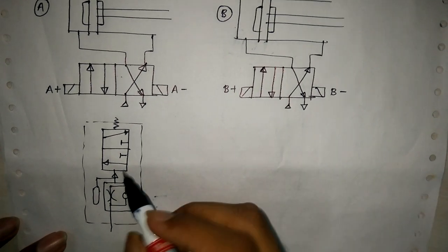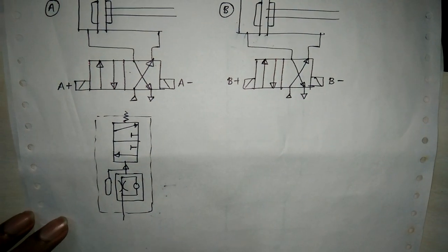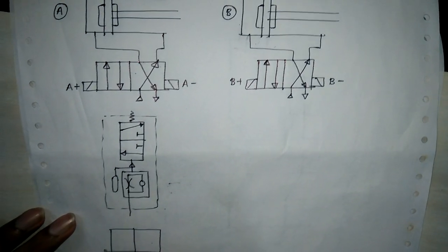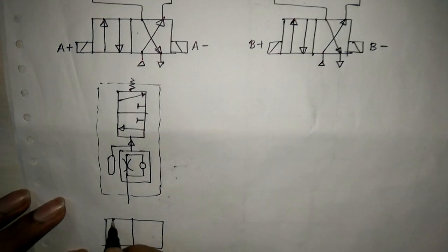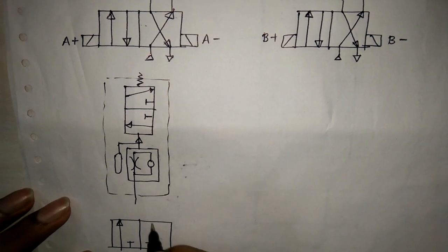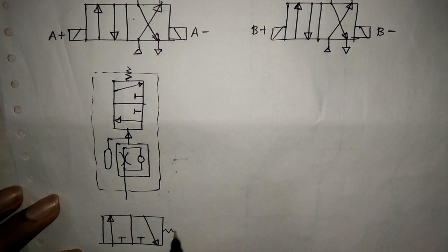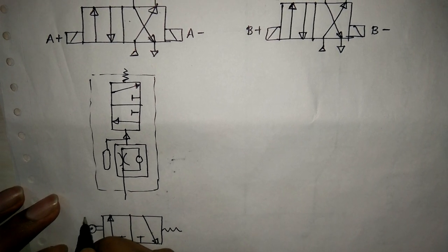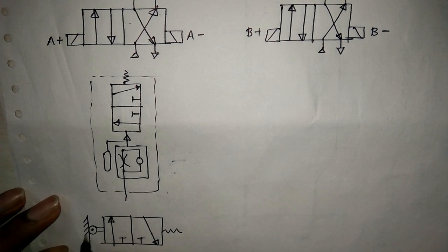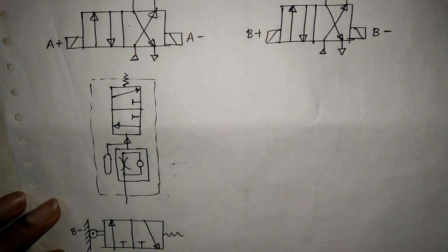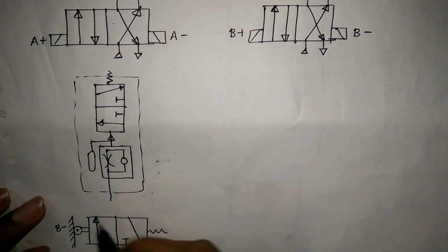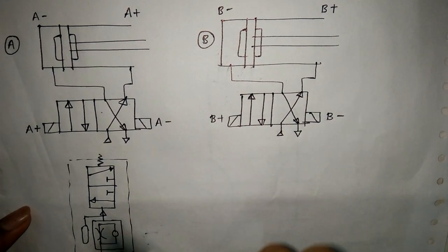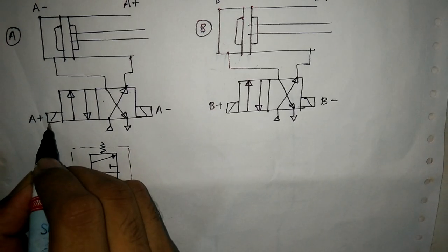Then we have to draw B-. All the valves will be 3/2 close DC valves. This is the symbol for delay and this is the symbol for B-, having a spring. Because B is minus, we have to fix that. This is your B-.